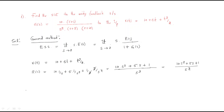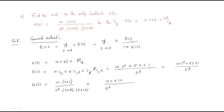Next, G(s) is already given as 10(s+1) / [s²(s+2)(s+10)]. We expand the denominator: s²·(s+2)·(s+10) gives s⁴ + 12s³ + 20s². So G(s) simplifies to (10s + 10) / (s⁴ + 12s³ + 20s²).